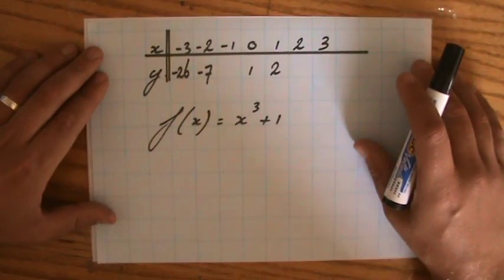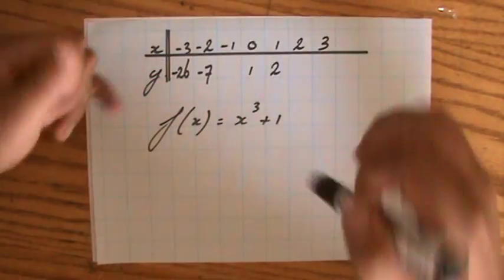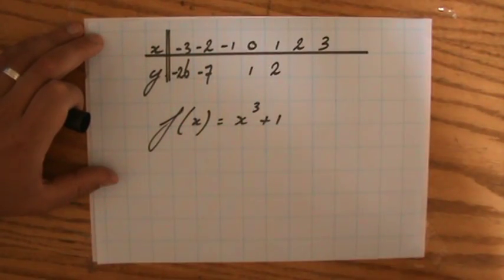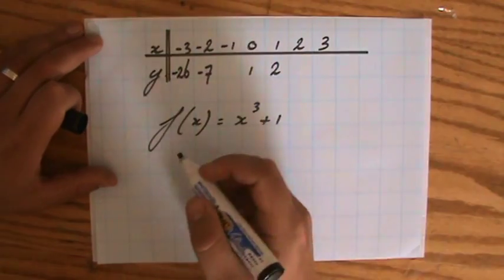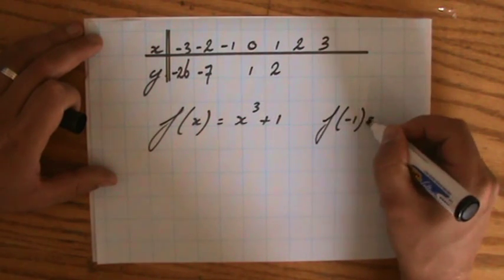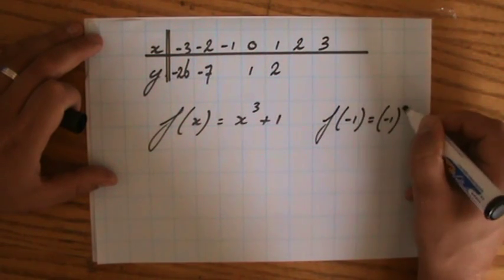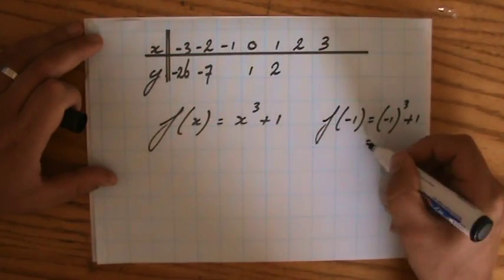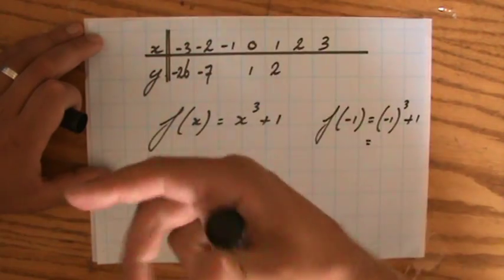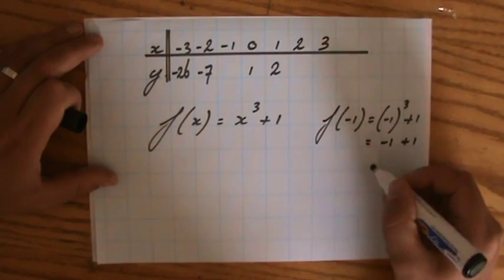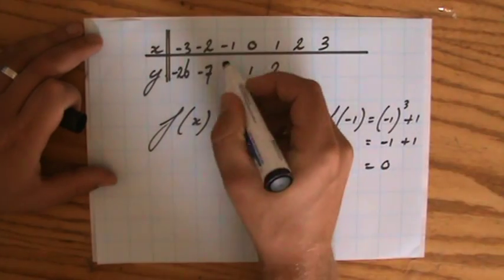I have made a table of values and I already have done 4 points and we have to complete it. Usually you get like a point for each coordinate you complete. If we check it for minus 1, so I evaluate the function f for minus 1. Then if you use your calculator, make sure to put some brackets there. Minus 1 to the power of 3 plus 1, because minus 1 times minus 1 times minus 1 is minus 1 plus 1, and that is going to be 0.